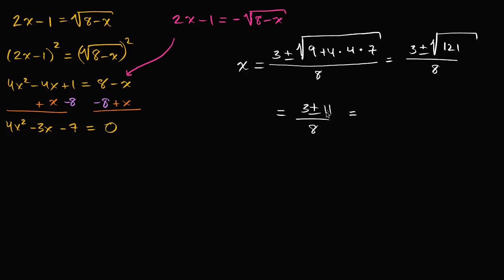That gives us: if we add 11, we get 14 over eight; or if we subtract 11, three minus 11 is negative eight, so negative eight divided by eight is negative one. So we have two candidate solutions, but remember one of these might be a solution to that alternate radical equation. We need to check — one is very likely an extraneous solution.